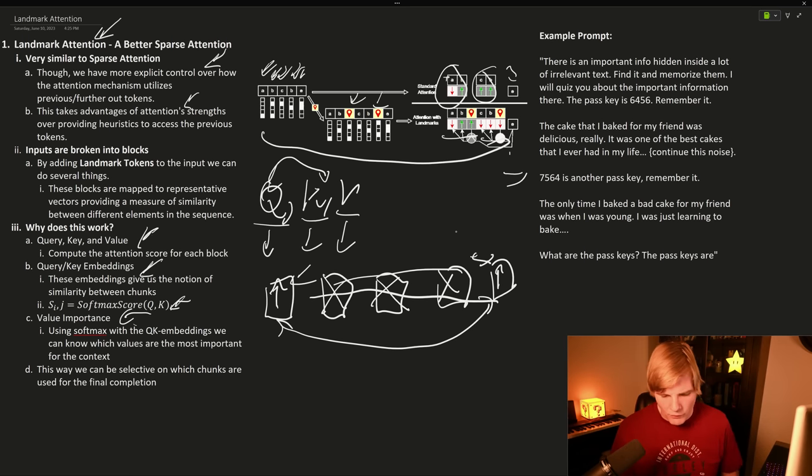And then we're going to use that attention score with our values, our possible completions, to determine who are the most important tokens. And this allows us to be very selective on which chunks are used for the final completion.